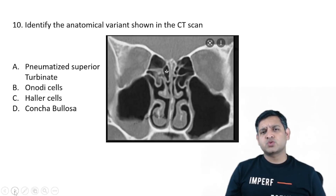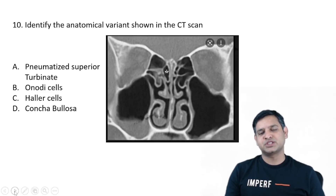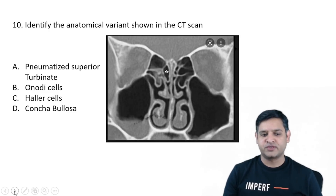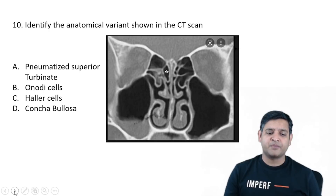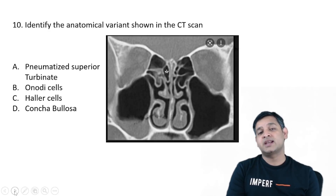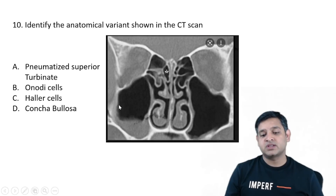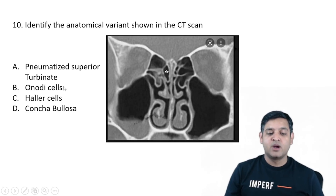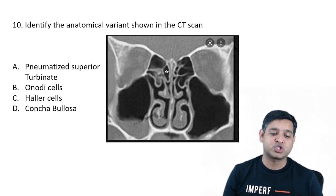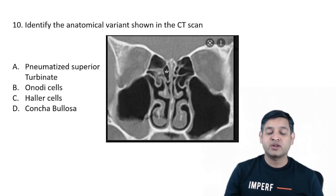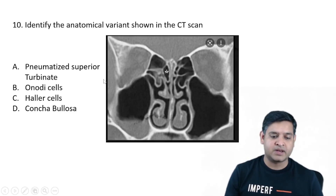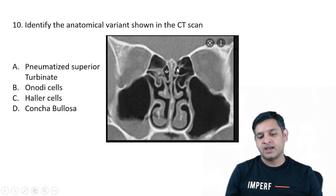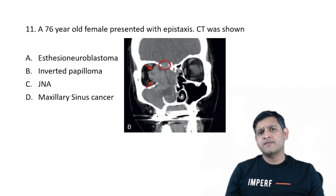Another question — AIIMS is known to ask about CT of the PNS. The question was to identify the anatomical variant shown in the CT scan. The choices I could gather were pneumatized superior turbinate, Onodi cell, Haller cell, and concha bullosa. If the image shown was a pneumatized superior turbinate, that should be the answer — Onodi cell is much more posterior, Haller cell is more lateral, and concha bullosa refers to the middle turbinate, not the superior turbinate.